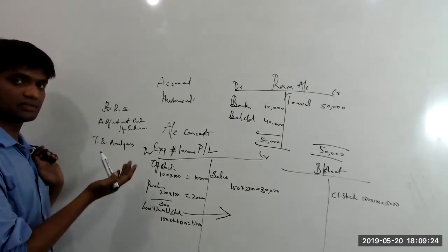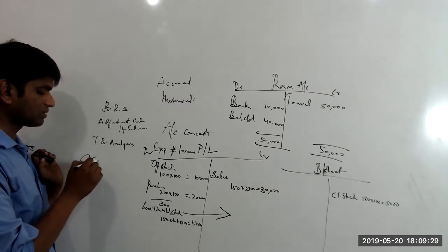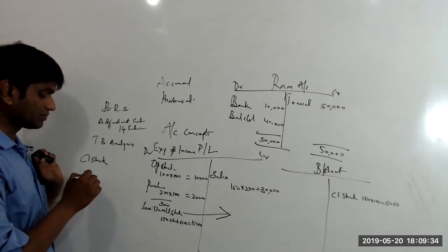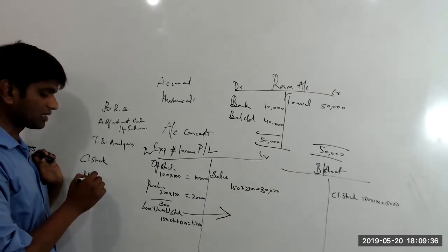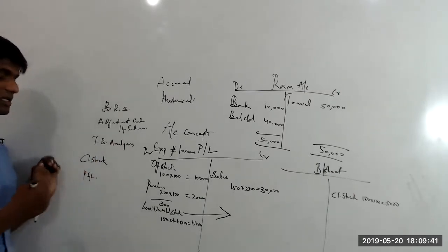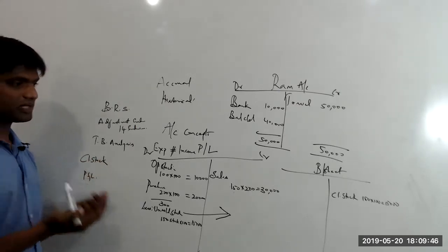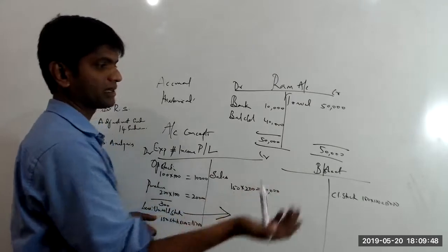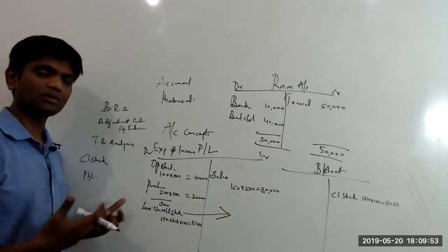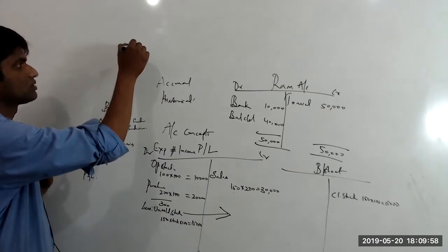We'll address questions like: why does closing stock not appear in the trial balance? Why does the depreciation for the current year not appear in the trial balance? We'll research and logically understand these, and also understand why only balance sheet items are carried forward to the next year. Once this is done, we move to accounting standards.